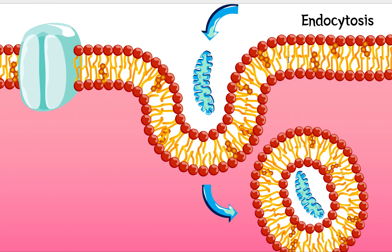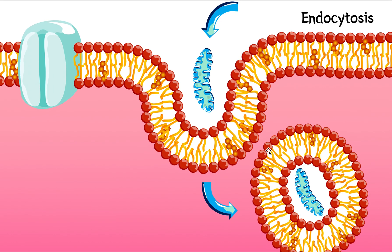The cell will approach the bacteria, and the membrane will start folding or bending to fold around it — kind of like a mouth eating the bacteria. Eventually, after the membrane completely surrounds it, it will pinch off. A piece of the membrane breaks off with the bacteria or big molecule inside, and the remaining membrane repairs itself. This little structure is made up of the original membrane with the molecule inside — that's really it for endocytosis.